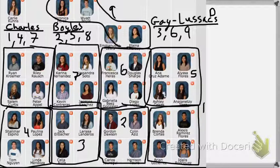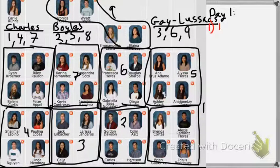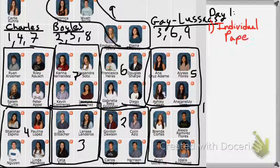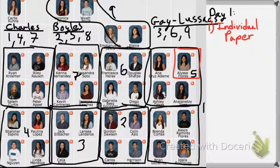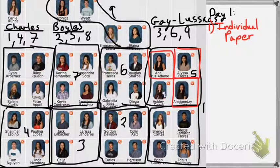There are three components to this particular project. First up, and this should be done today, there is an individual paper. That means that Alyssa will write her own paper about Boyle's Law. Genetze will write her own paper about Boyle's Law. Anna will write her own paper about Boyle's Law. And Ashley will write her own paper about Boyle's Law.